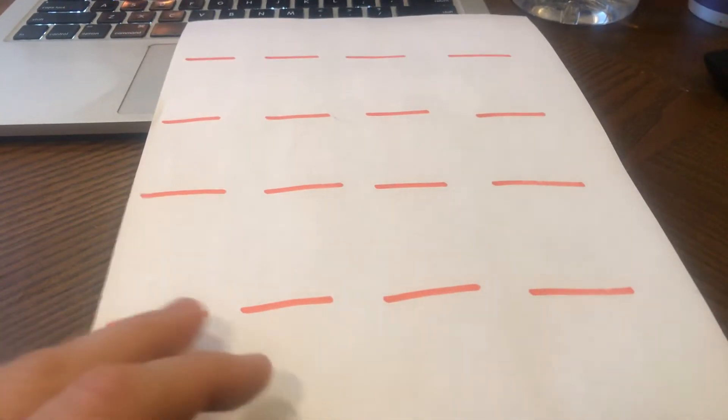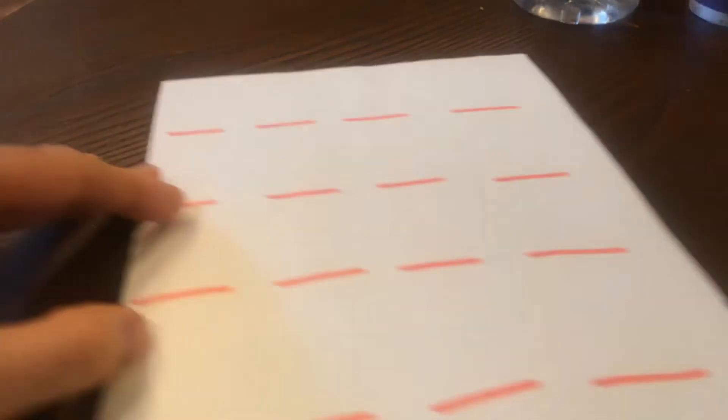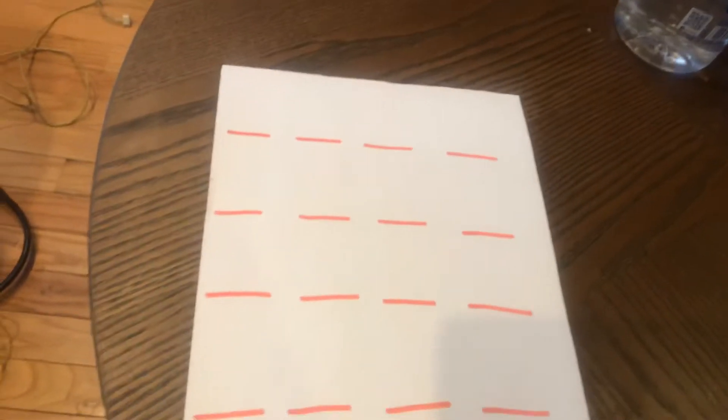So take a piece of paper, draw 16 beat marks, and then on each beat you are going to draw either a quarter note, two eighth notes, or a rest. Okay, we've done something like this in class before.